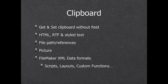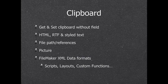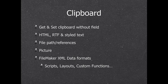We have clipboard functions that work without a field. We can get or put HTML, RTF, and styled text on the clipboard. If the user selects something in Safari and copies it, we can paste it into FileMaker. We can query which file paths are on the clipboard or put files on the clipboard, as well as pictures. We can work with all the FileMaker XML data formats — if you copy a script in FileMaker, we can get the XML FileMaker puts on the clipboard and restore it later. Some people build snippet databases with pre-made scripts they can copy directly into FileMaker.